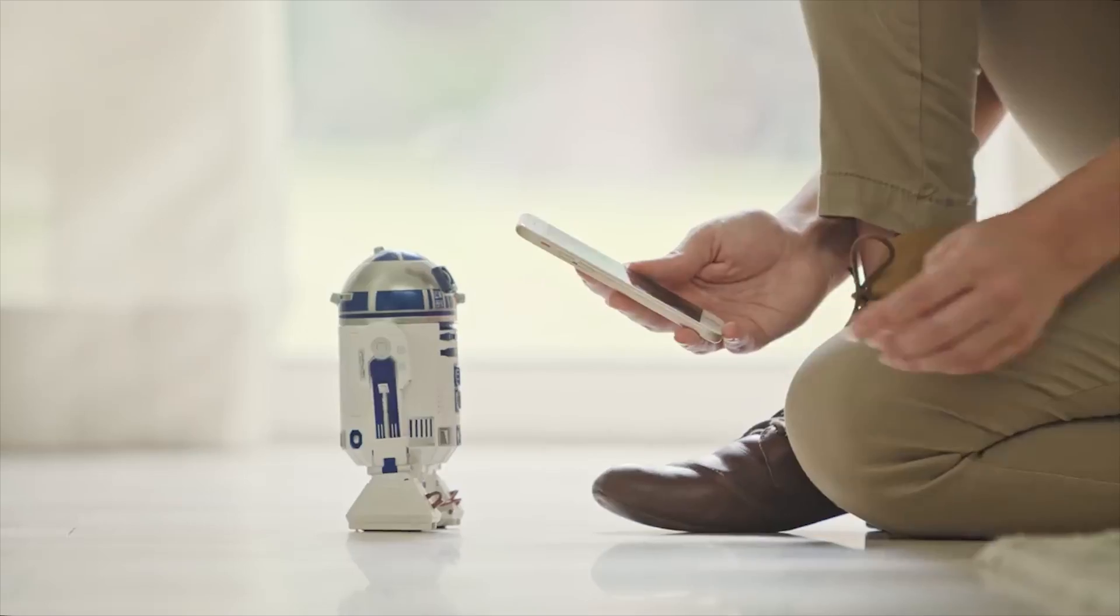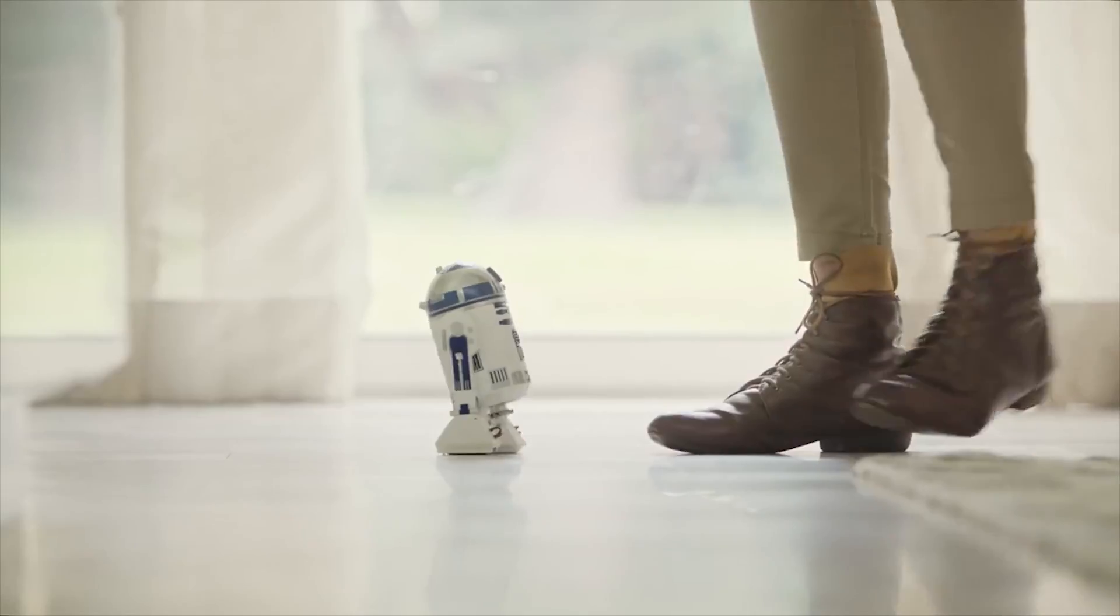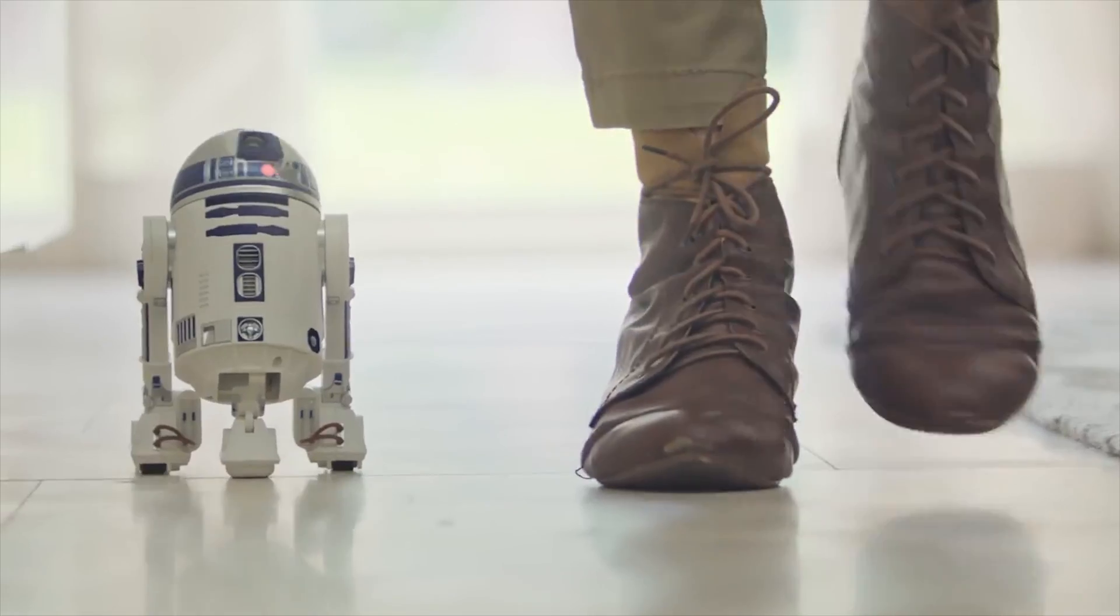In case you missed it, Force Friday was September 1st and one of the great things that came from this massive release of Star Wars products was the R2-D2 robot from Sphero, that company that's behind that adorable BB-8 robot that came out during the episode 7 release. It sure looks like they captured all the personality of R2-D2 and put it into this wonderful 7-inch replica and the details are amazing.